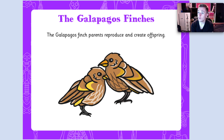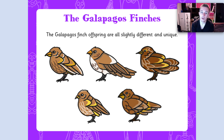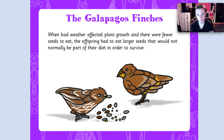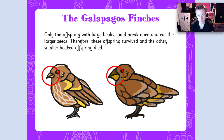Now we look at the Galapagos finches. The Galapagos finch parents reproduce and create offspring. They're all slightly different and unique — each and every one is slightly different. When bad weather affected the plant growth and there were fewer seeds to eat, the offspring had to eat larger seeds that would not normally be part of their diet to survive. It was either eat the larger seeds or die. But only the offspring with large beaks were able to eat those larger seeds. So they survived.